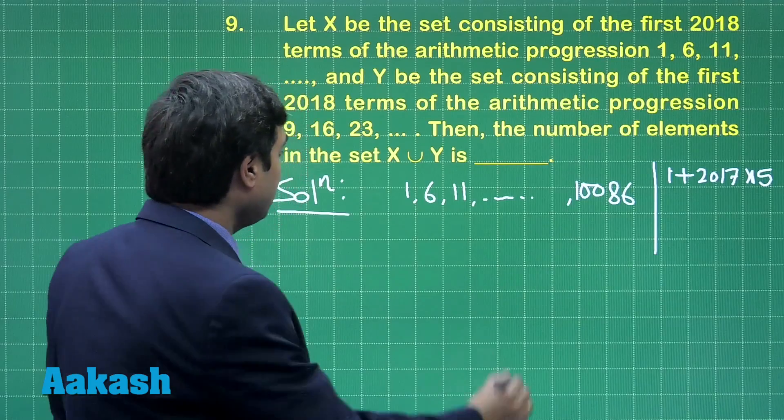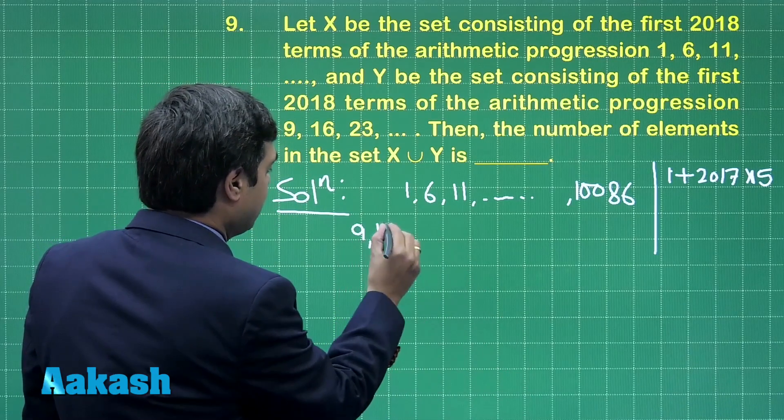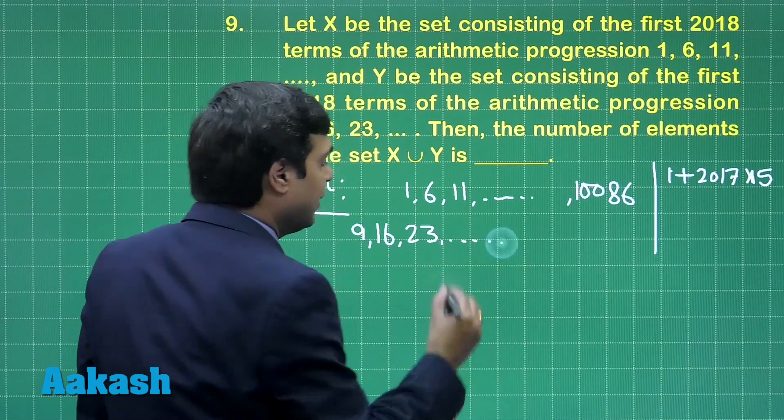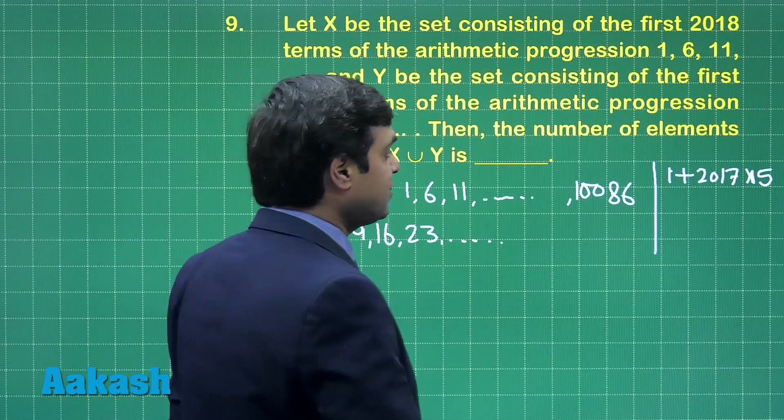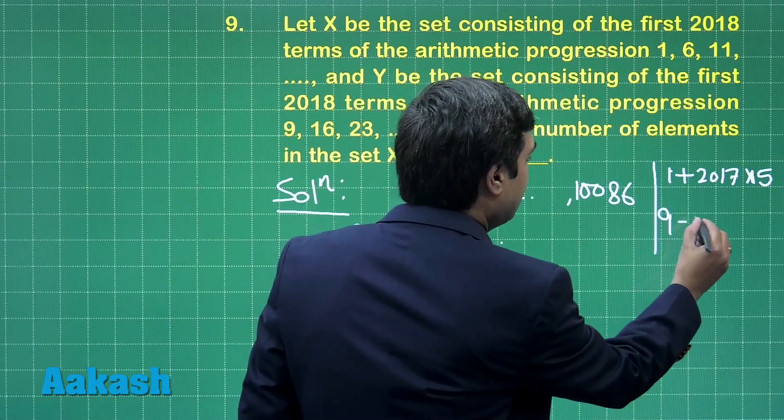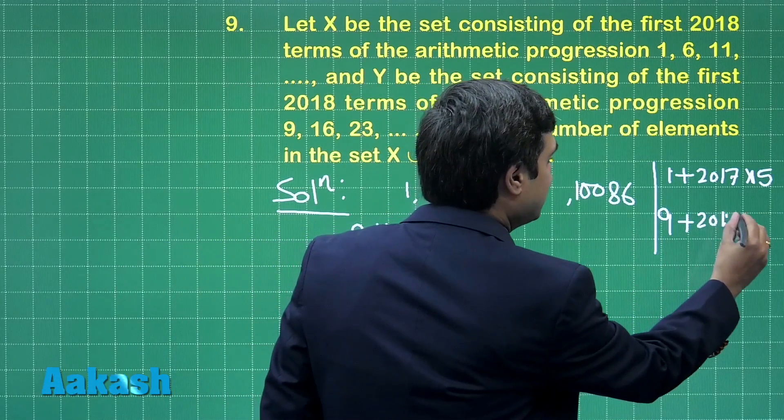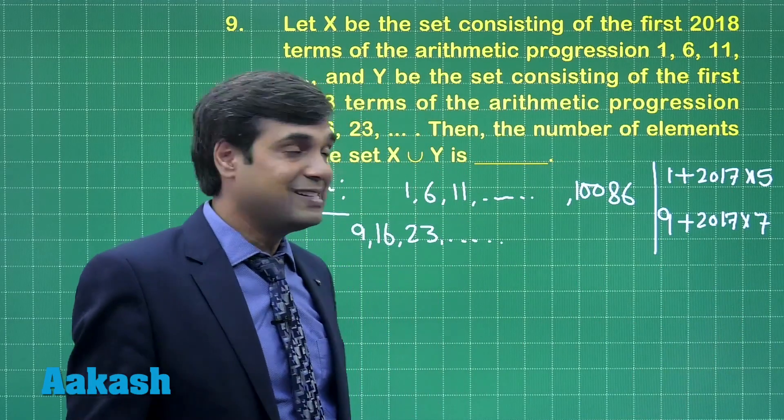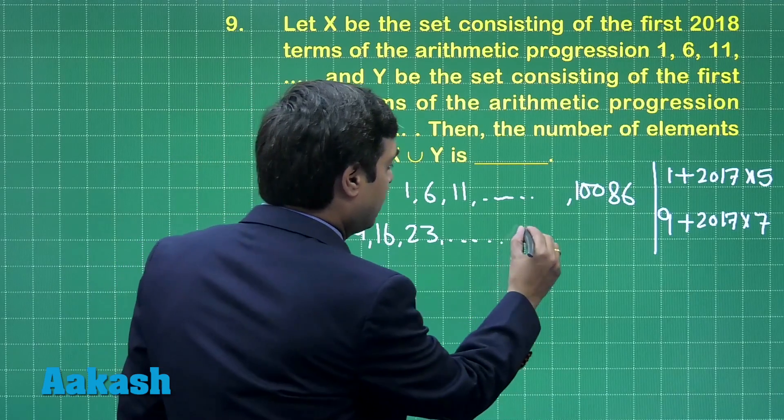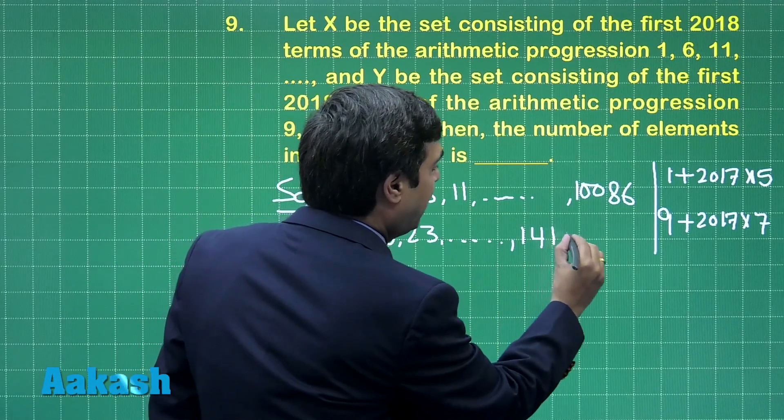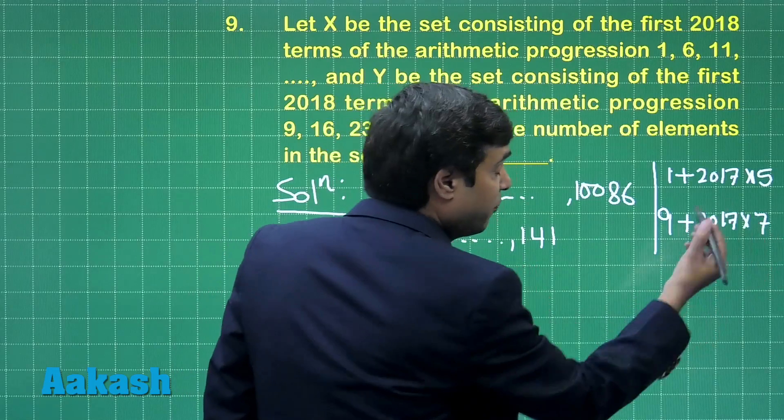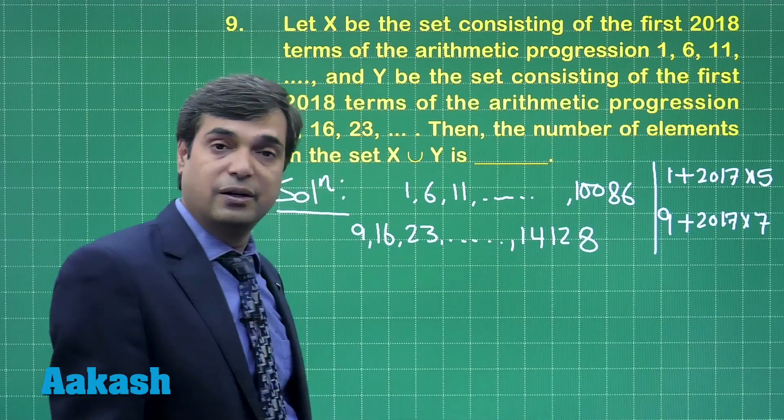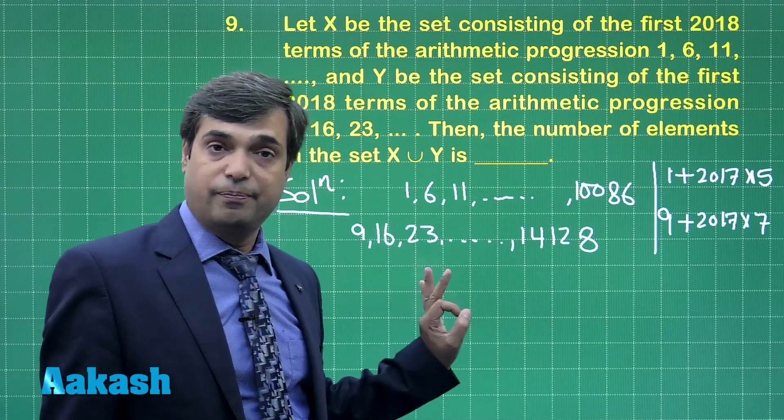Next AP that is 9, 16, 23 and so on. Let us talk about its 2018 term. This would be 9 plus 2017 multiplied with 7 as the common difference this time is 7. So, this comes 14119 plus 9 that is 14128. So, 14128 as the 2018 term.